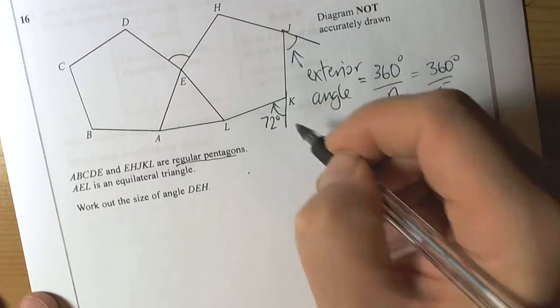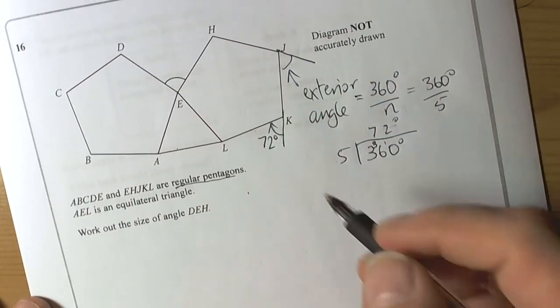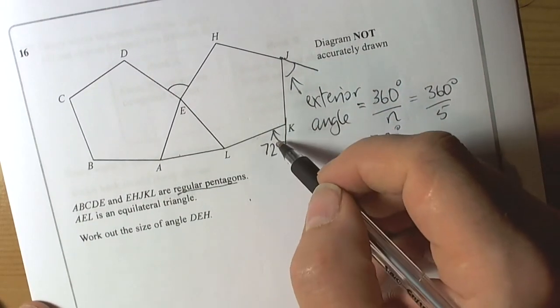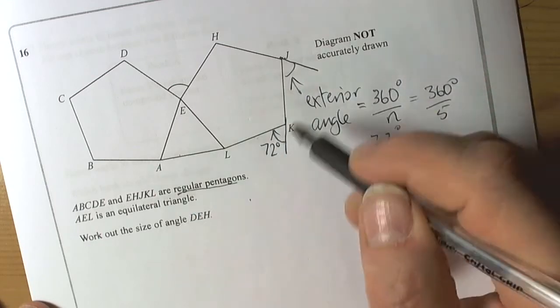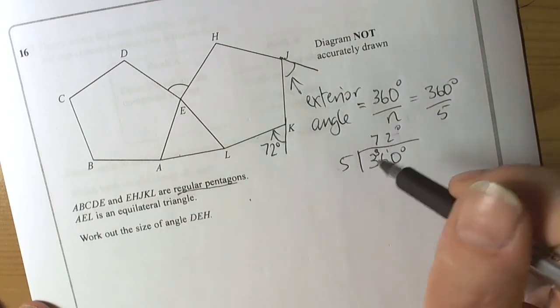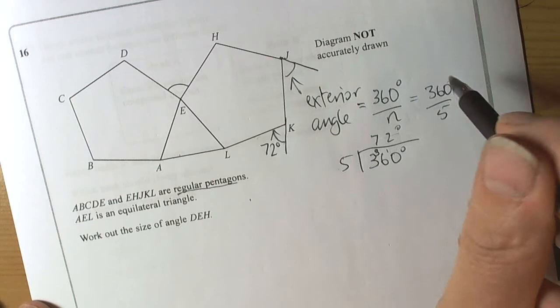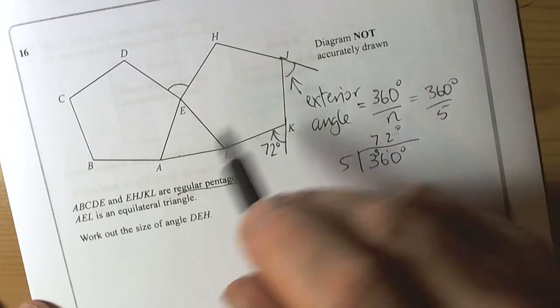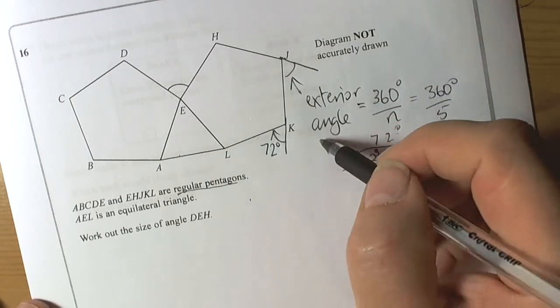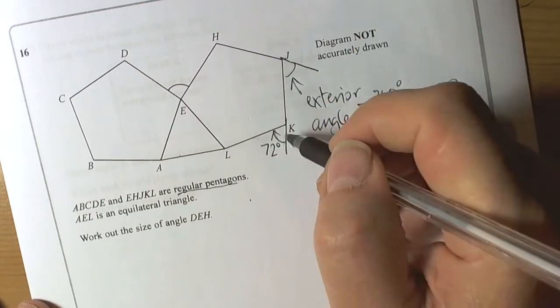We know the exterior angle is going to be 72 degrees. Once we know the exterior angle, doesn't matter what the question is about polygons, I'd really recommend go for the exterior angle, whether they want it or not. It will help you, probably, to get the rest of the question done.